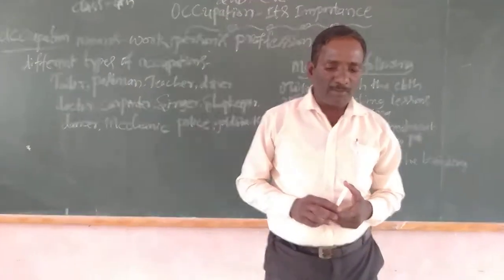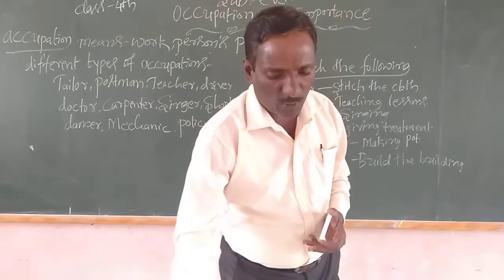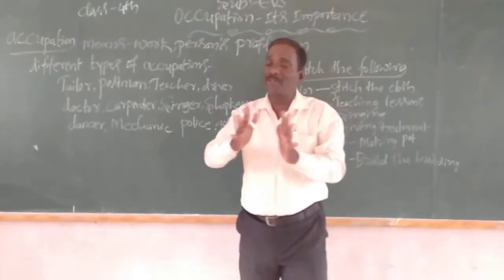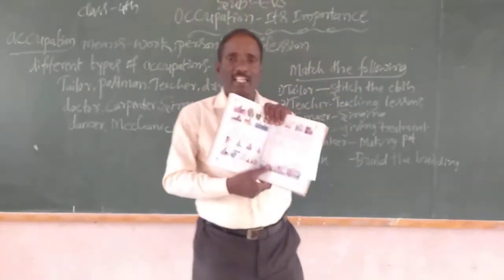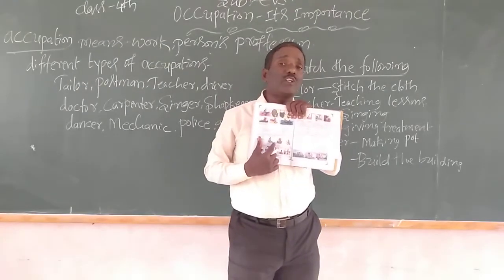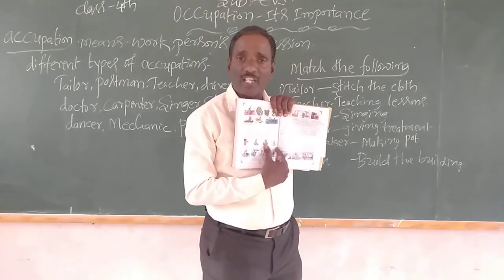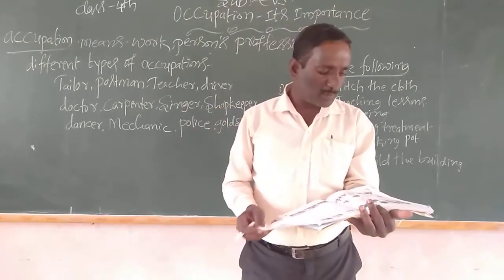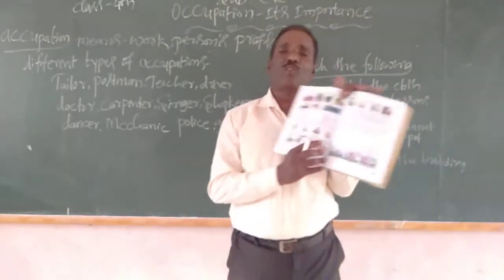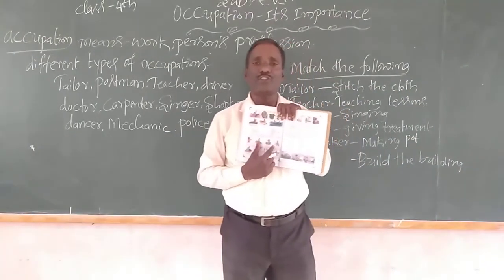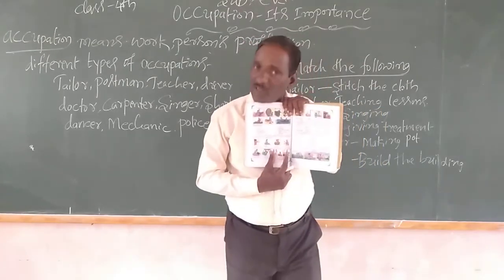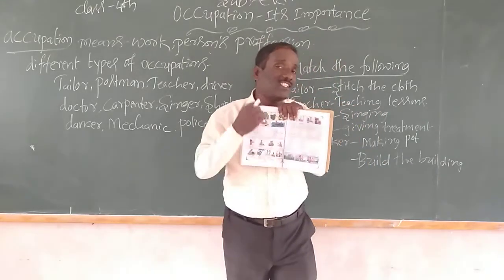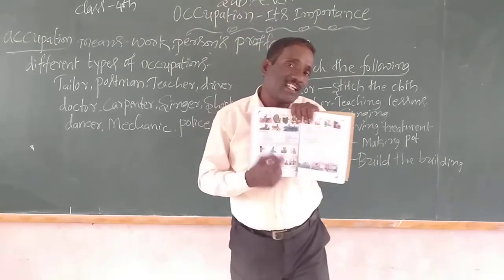Next, pictures of persons doing different occupations are given in your textbook. Look once again — the people do different types of occupations. Think: who are they? What is their occupation? Write in the space given. Look at your textbook and think about which type of occupation each person does, then write in the given places.